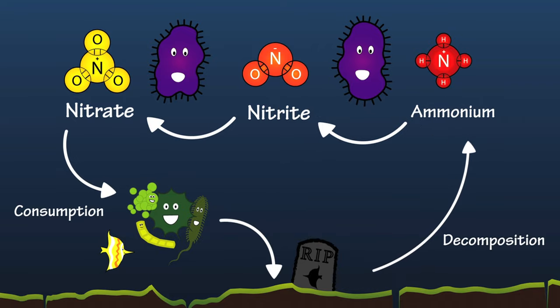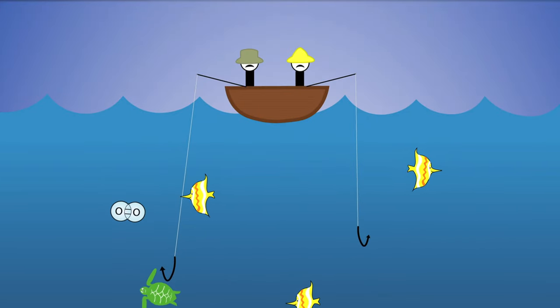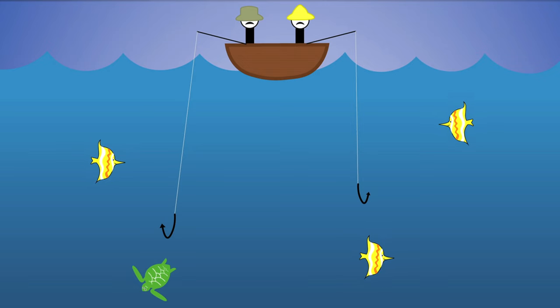All this extra nitrogen overwhelms the cycle and depletes the oxygen in the ocean. A lack of oxygen dramatically affects the ecology and fisheries of the affected region, as fish and other animals need to breathe oxygen to survive.